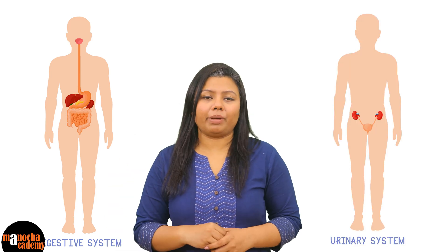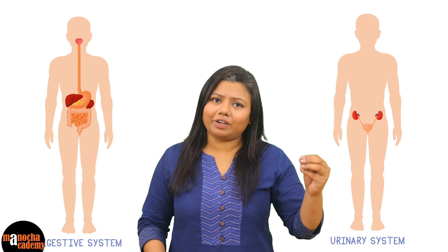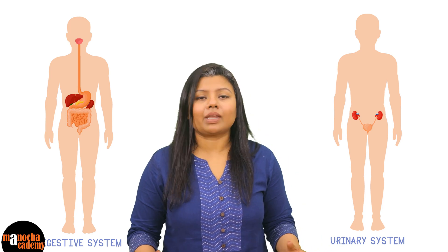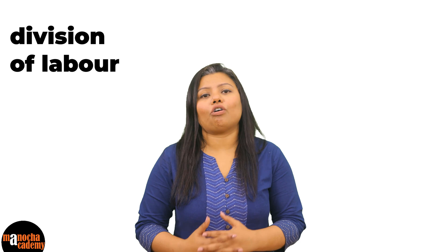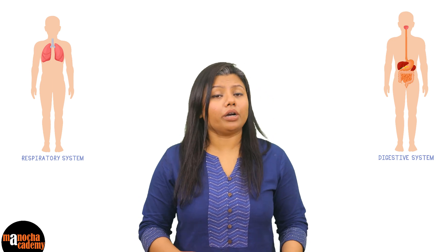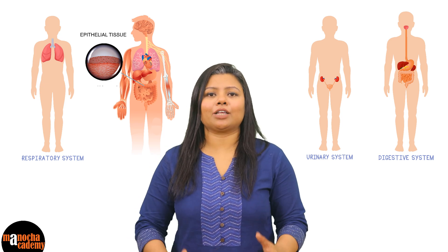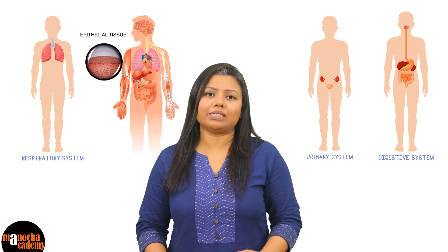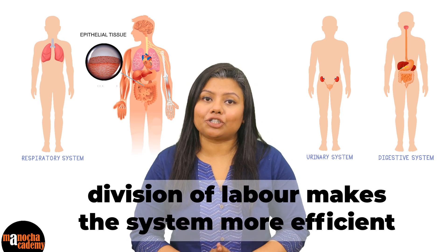Think about it — if you did not have a separate system for digestion and a separate organ for urine formation, for example your kidney, and each and every cell of your body had to perform the same function of digestion and excretion, would it be more efficient? No. Something called division of labor comes into existence because of cellular organization. We now have organs specialized for respiration, digestion, excretion, and even tissues responsible for protection. This makes working of the entire human system much more efficient, and therefore division of labor is extremely important.